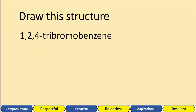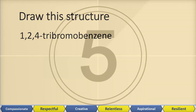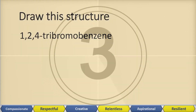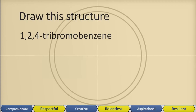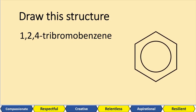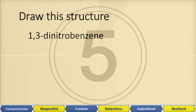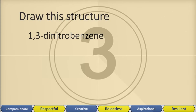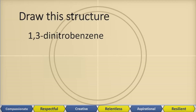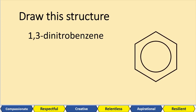Now let's do the opposite — draw this structure: 1,2,4-tribromobenzene. Let's first draw our benzene structure. We've got positions 1, 2, and 4. It doesn't matter where you start from as long as the spacing between them makes sense. So we've got 1, 2, and then 4 over there. And here: draw our benzene ring with nitrile groups in the 1 and 3 positions — so that's 1,3-dinitrile benzene.